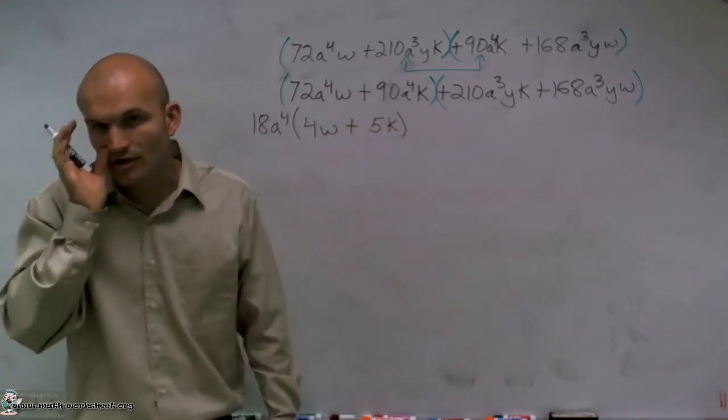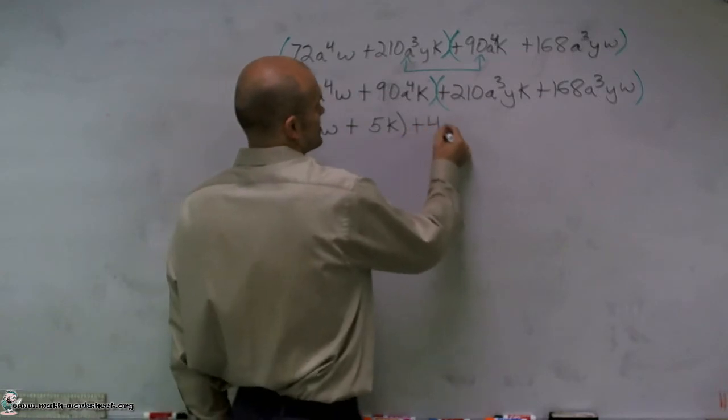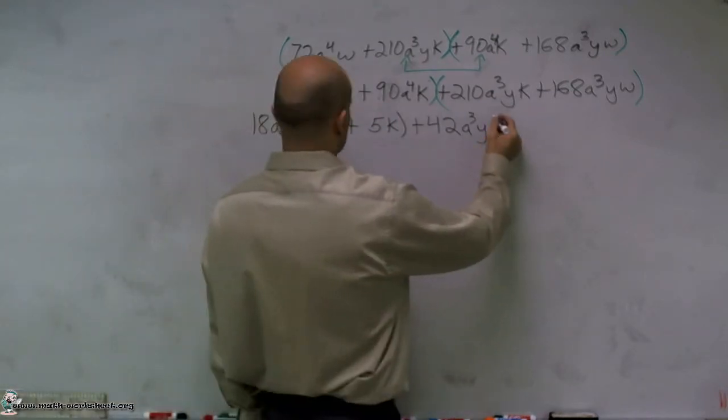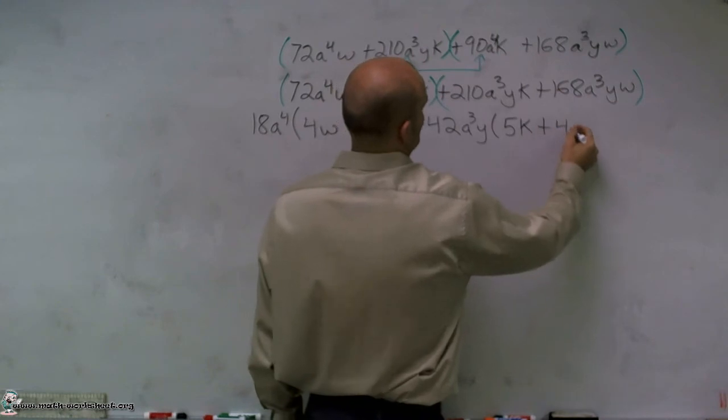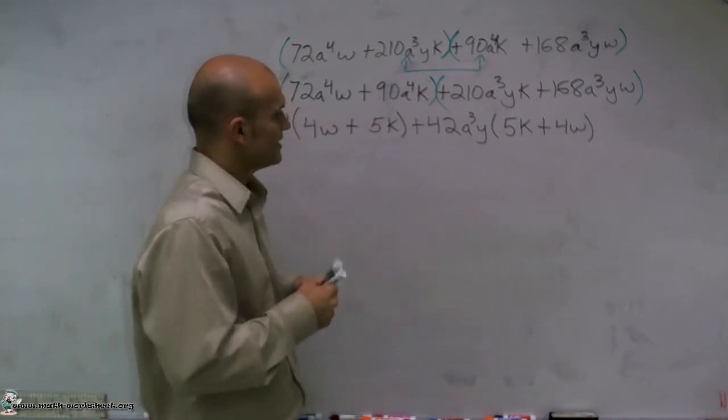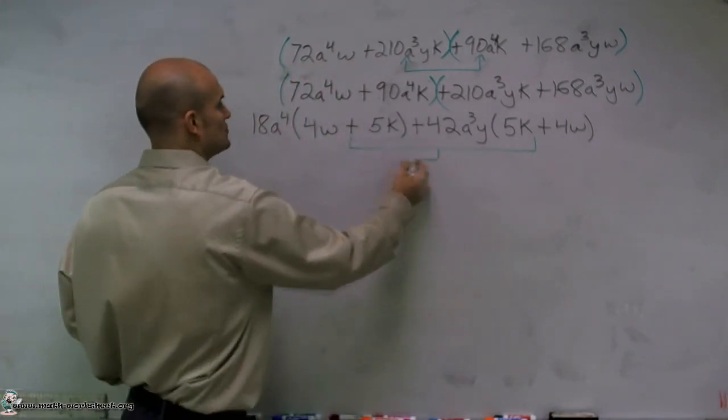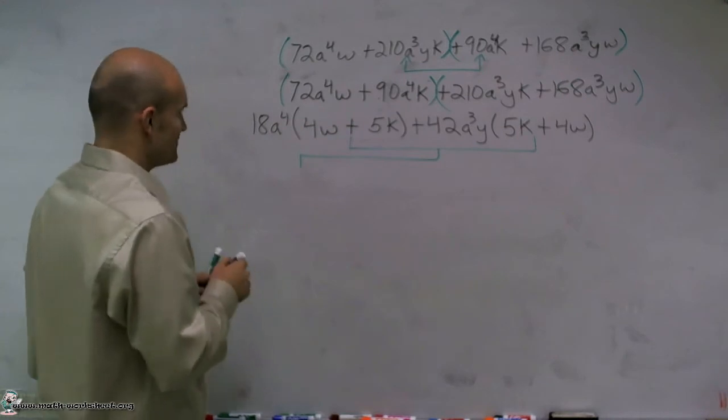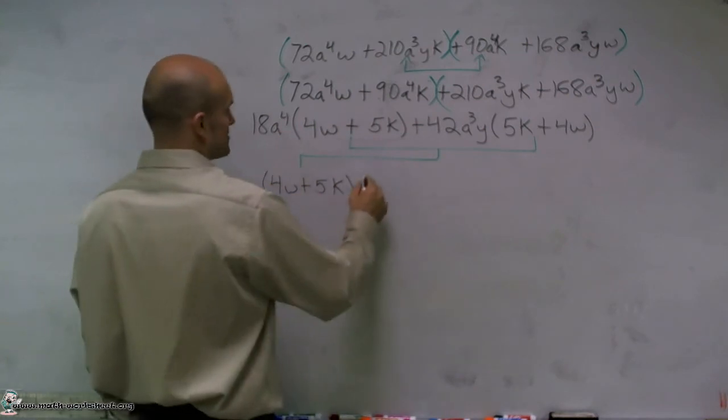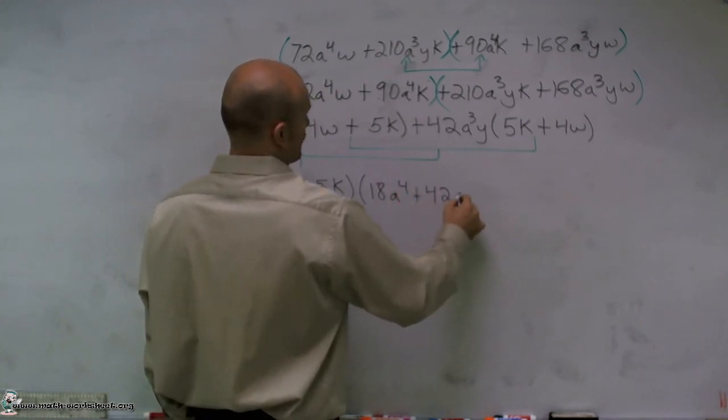Over here, I need to look and figure out what my greatest common factor is, and what I notice is it's going to be 42. And so when I factor out a positive 42, a cubed y is the greatest common factor for my variables, I'm left with again a 5k plus 4w. Now I know that these aren't in the same order, but the distributive is commutative, so we can just rearrange those. What we notice is these are exactly the same. So what I can do is now factor those two terms out. So I'm left with now 4w plus 5k times 18a^4 plus 42a^3y.